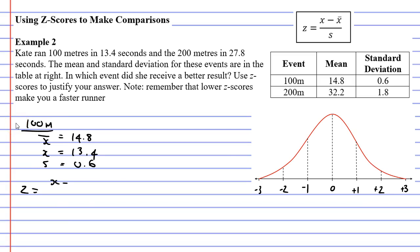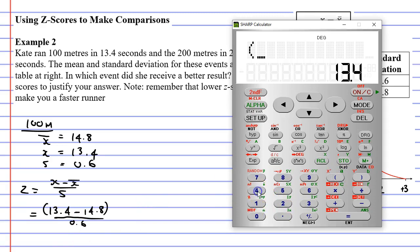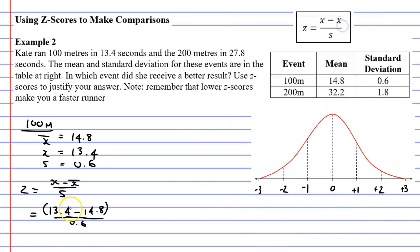Now we can use our formula to calculate the z-score. z equals x minus x-bar over s, and substituting our values, x is 13.4, x-bar is 14.8, and s is 0.6. Now I'm going to use my calculator to find the solution here. But before I do that, I want to point out that we need to put brackets at the top of the fraction. That's going to force the calculator to subtract before it divides. So we're going to go bracket 13.4 minus 14.8, closing our brackets, then finally dividing by 0.6. And we get negative 2.3 continuous. I'm just going to write that to one decimal place.